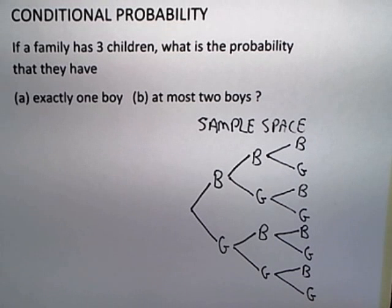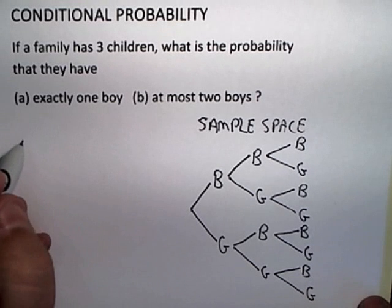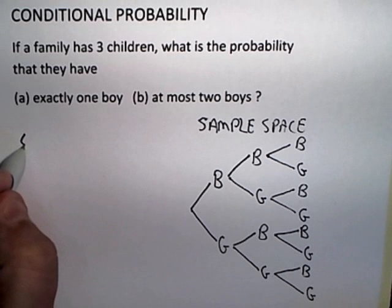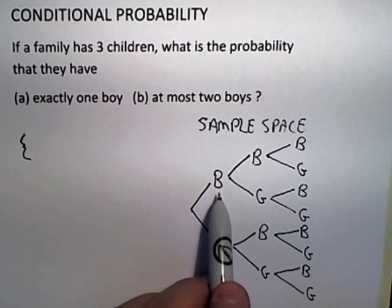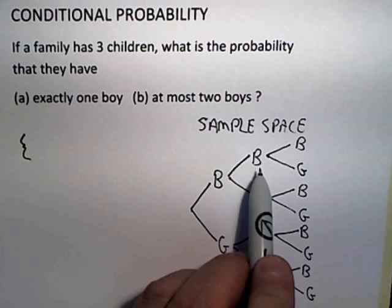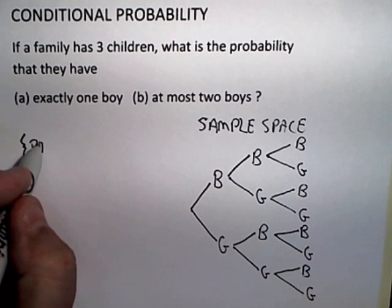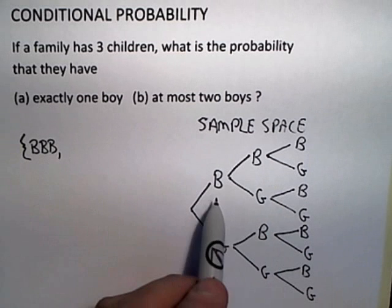Now I might not even write it out formally, but for this purpose I will. Looking at this, I could actually write out the sample space using the tree diagram. It's boy, boy, boy—in other words, all three children are boys.